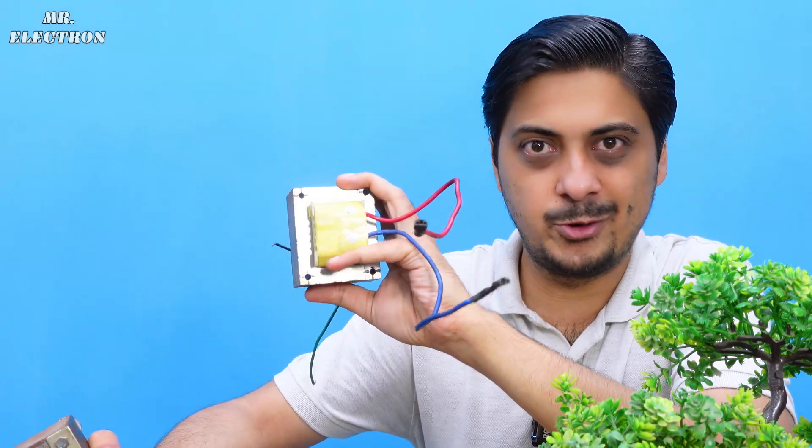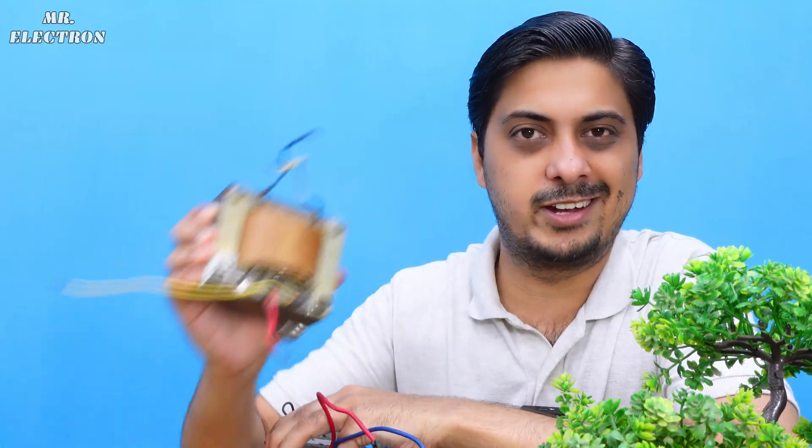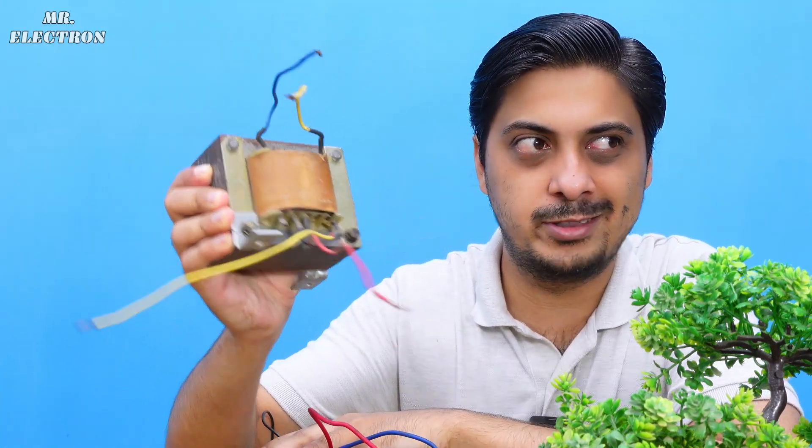At six volts the motor is running at 750 rotations per minute. If we connect this 24 volts transformer, since the voltage is going to be four times higher, the output RPM for the motor is also going to be four times higher, right?